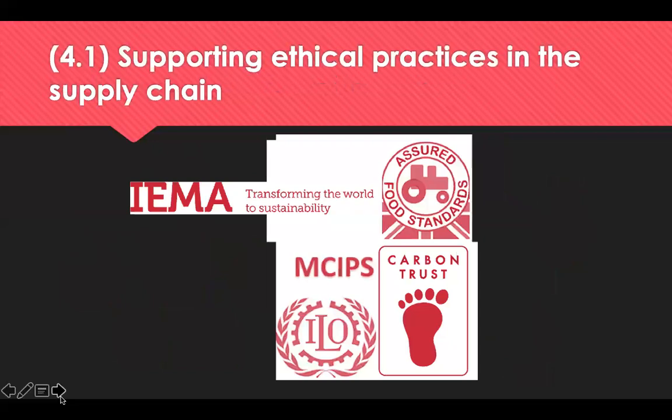Steps to support ethical practice in the supply chain include carrying out strong due diligence prior to the contract being awarded. Use selection and evaluation methods to assess which suppliers meet the criteria associated with ethical practice. Validate claims made by suppliers by checking their documentation and ensuring that processes are actually in place. Use suppliers that are accredited or are members of associations that promote good ethical conduct.